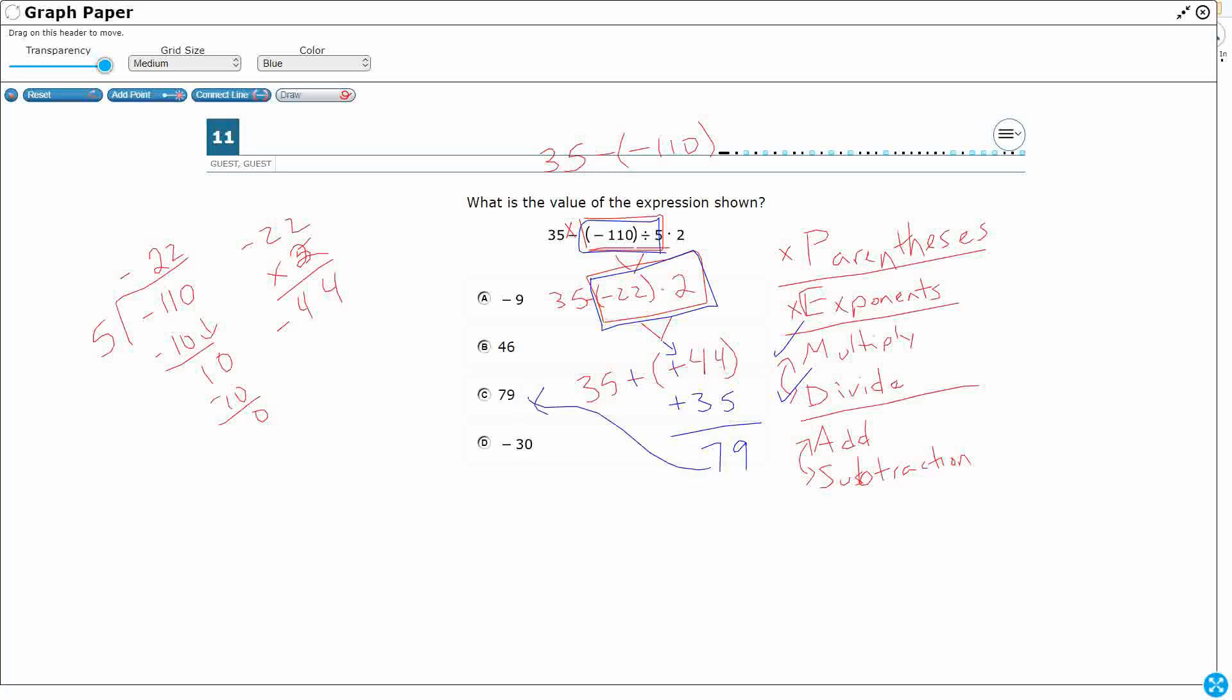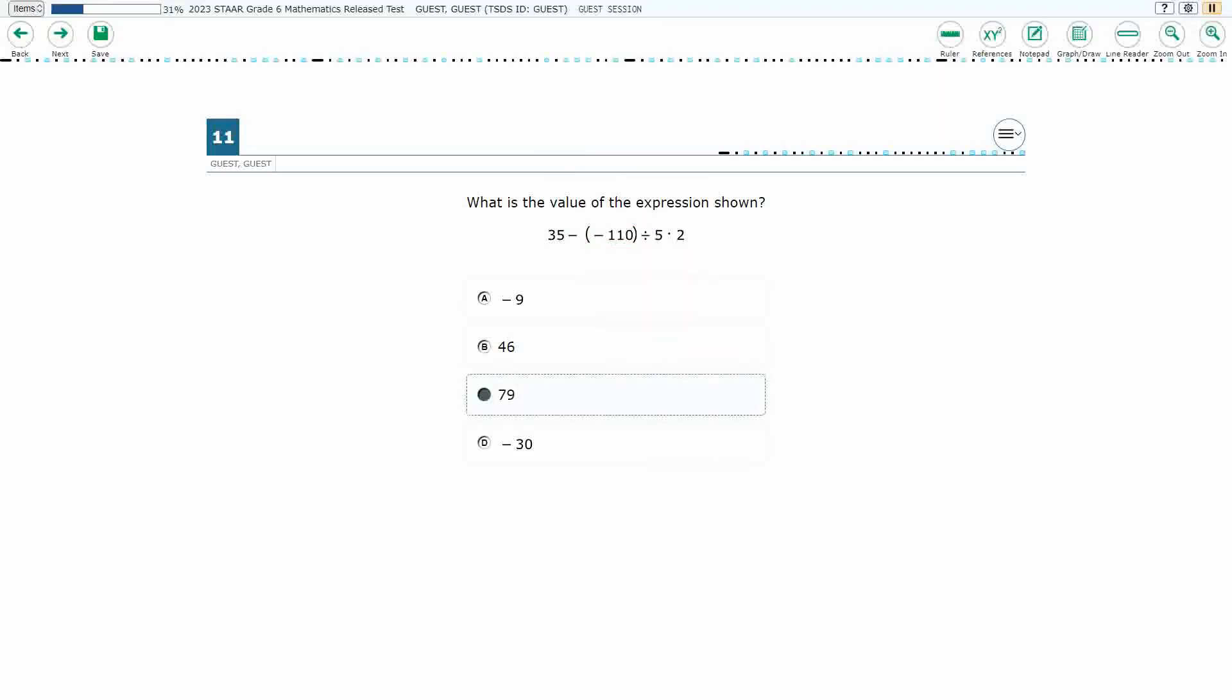So we use our order of operations. We had to take care of the division first, multiplication second, and finally we got to the subtraction, which ended up being addition anyways, answer C.